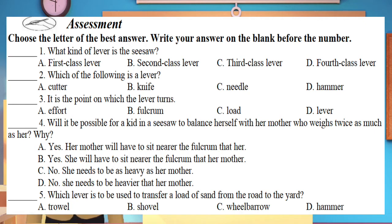For your assessment, choose the letter of the best answer. Write your answer in the blank before the number. Number one: what kind of lever is the seesaw? A. First class lever, B. Second class lever, C. Third class lever, or D. Fourth class lever. Number two: which of the following is a lever? A. Cutter, B. Knife, C. Needle, or D. Hammer. Number three: it is the point on which the lever turns. A. Effort, B. Fulcrum, C. Load, or D. Lever.